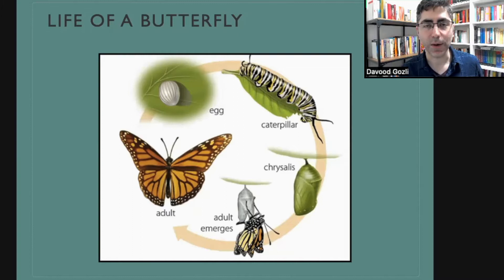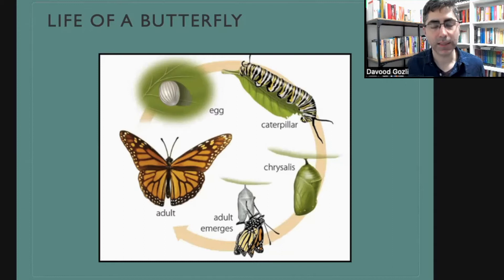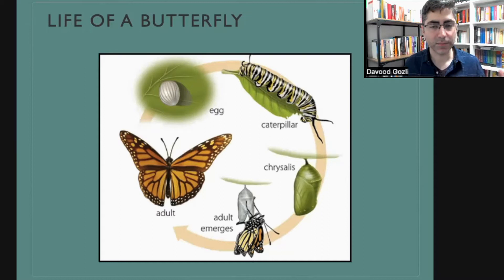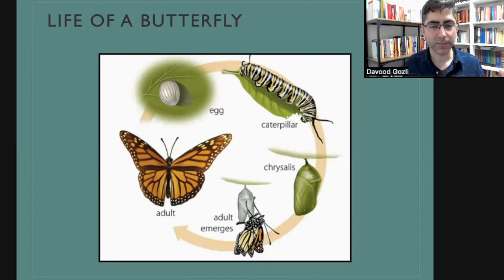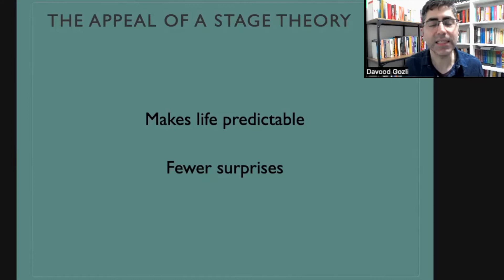When we move to human life, and especially the psychology of human beings, we are not dealing with stages that are as clearly different from each other as the life of a butterfly. But stage theories have their appeal, even with human psychology. Because when we have stages and work with them, these stage theories make life predictable — we know what comes next and feel like we won't be surprised.